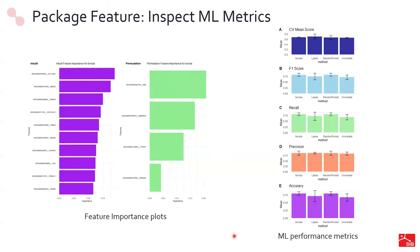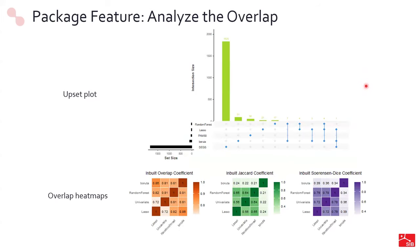Here I will introduce some of the metrics implemented to guide the process. Starting with inspection of machine learning performance metrics: you have feature importance plots, and machine learning performance metrics including cross-validation score, F1 score, recall, precision, accuracy score, and any other metric available from the scikit-learn package. After that, you can analyze the overlap between feature lists using an upset plot, which gives a nice representation, and you can also quantify the overlap using different coefficients to measure the degree of overlap between different lists.